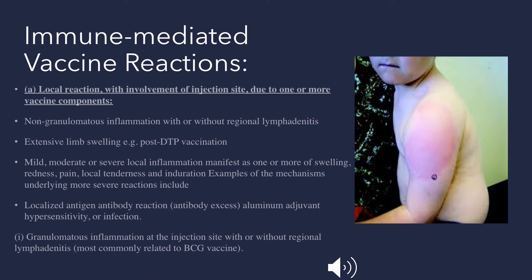Immune-mediated vaccine reactions may be local reactions, systemic reactions involving organs, or reactions involving multiple systems. Local reactions at the injection site due to vaccine components may be of two types: non-granulomatous inflammation and granulomatous inflammation. An example of non-granulomatous inflammation is extensive limb swelling, usually seen with DTP vaccination, where the person may have mild, moderate, or local inflammation with slight pain, redness, and swelling at the injection site.